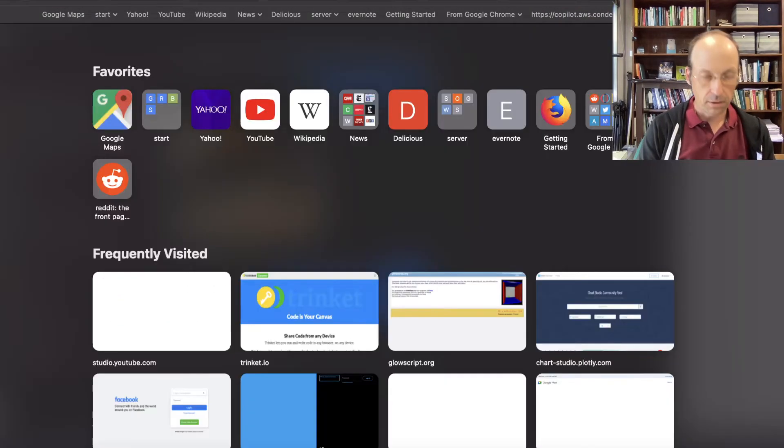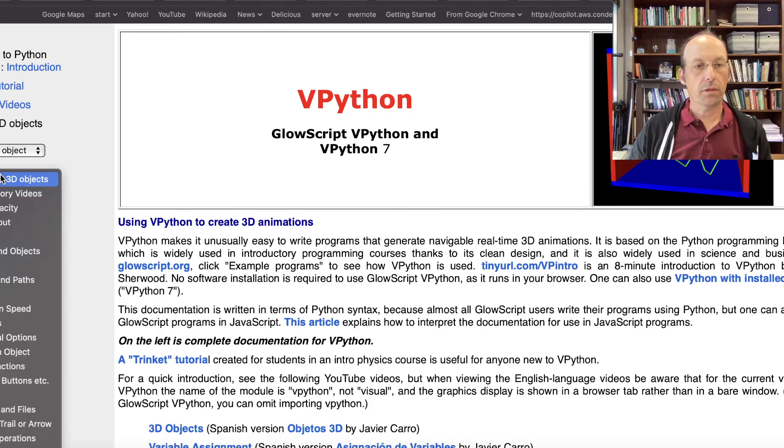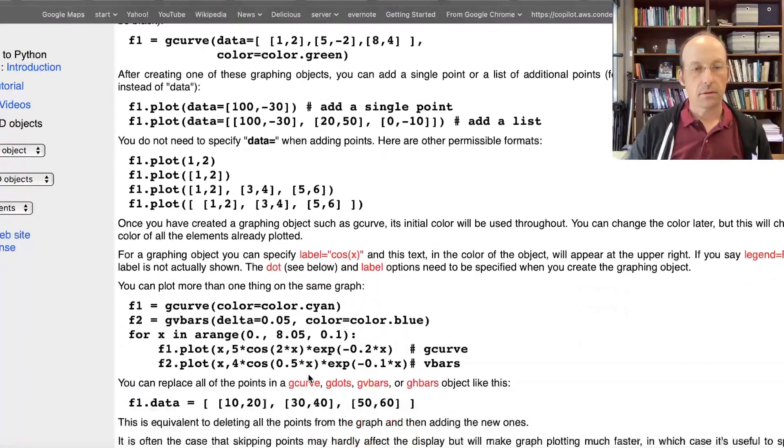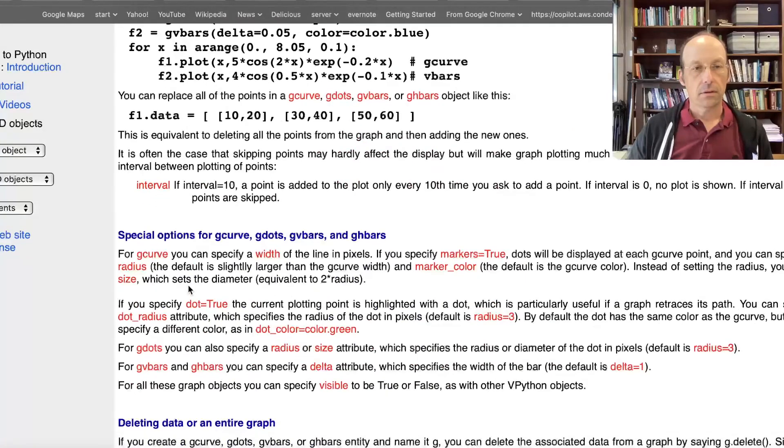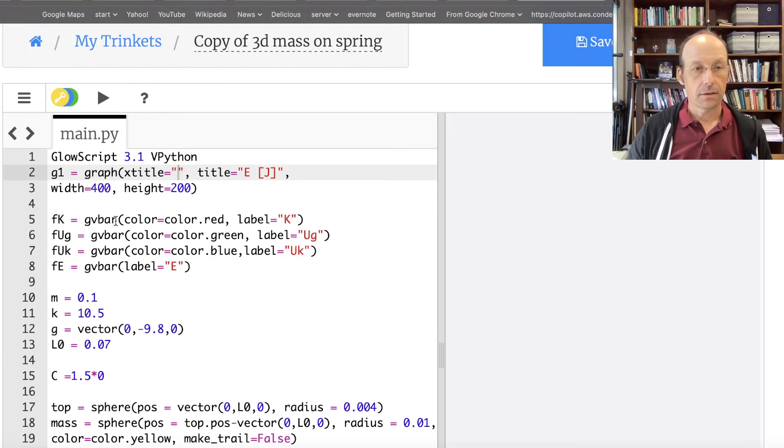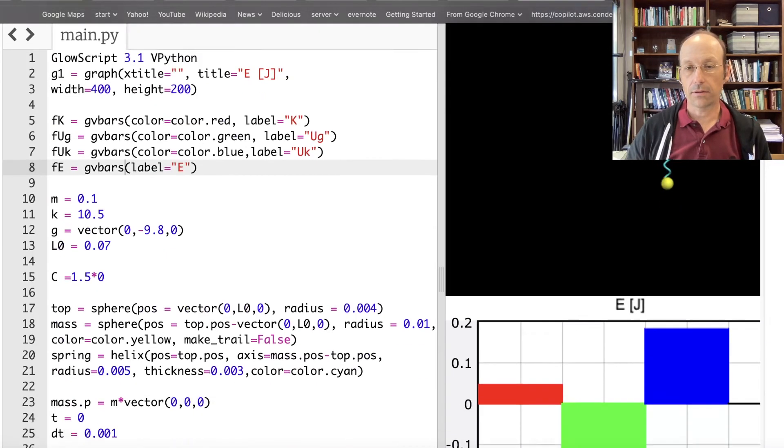Glow script help work with 3D objects graphs g v bar z That's why See I make mistakes Okay. That worked.